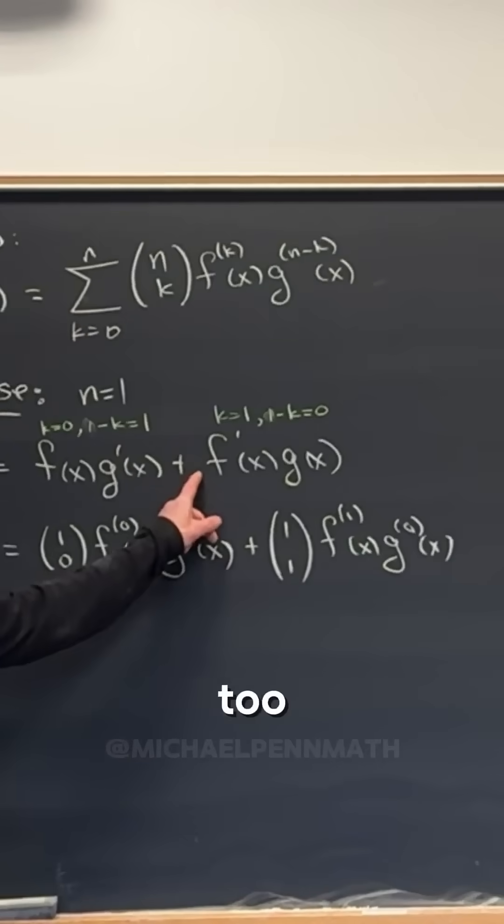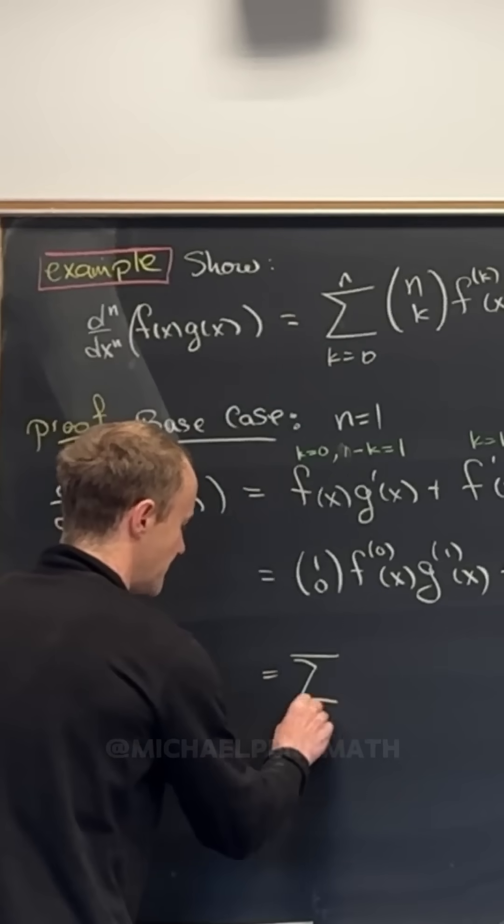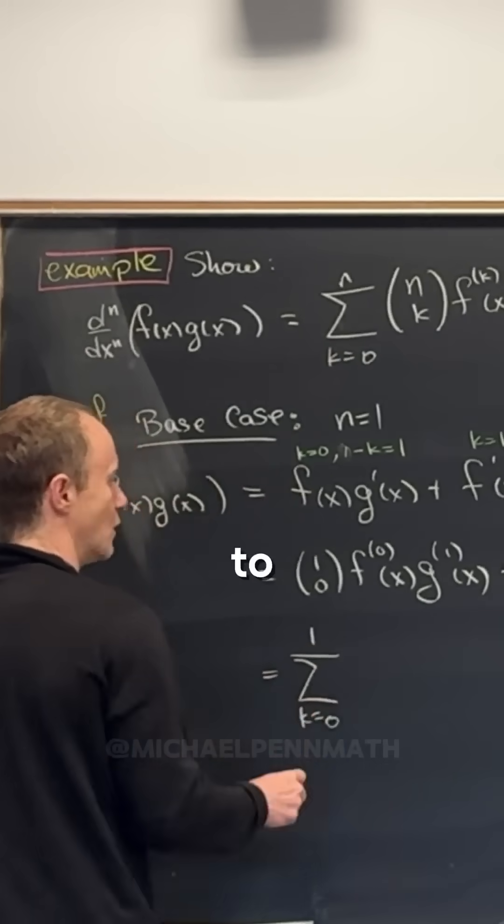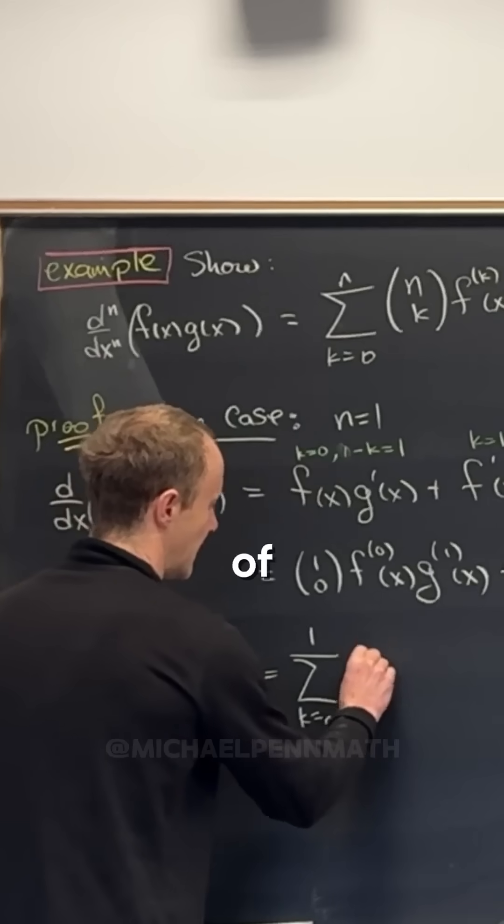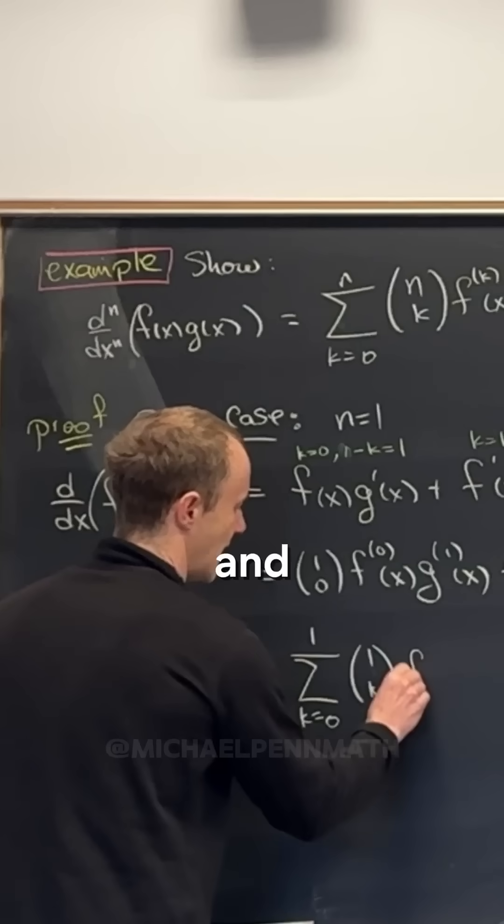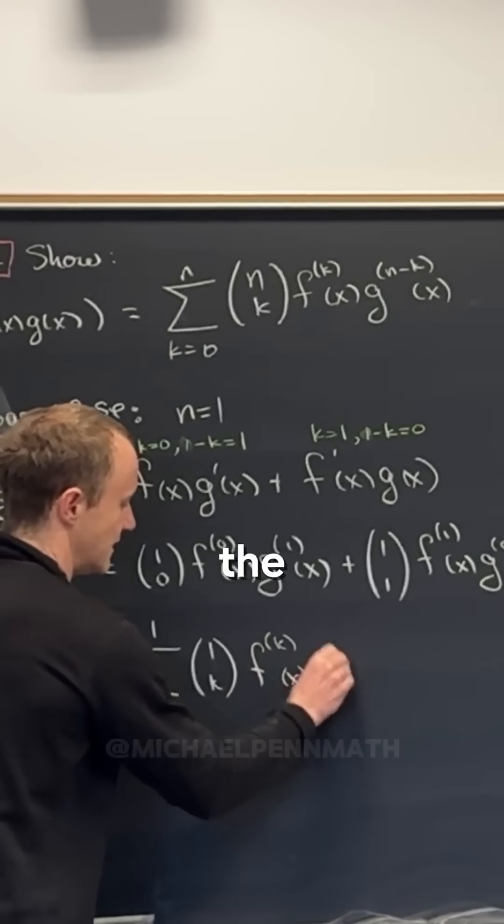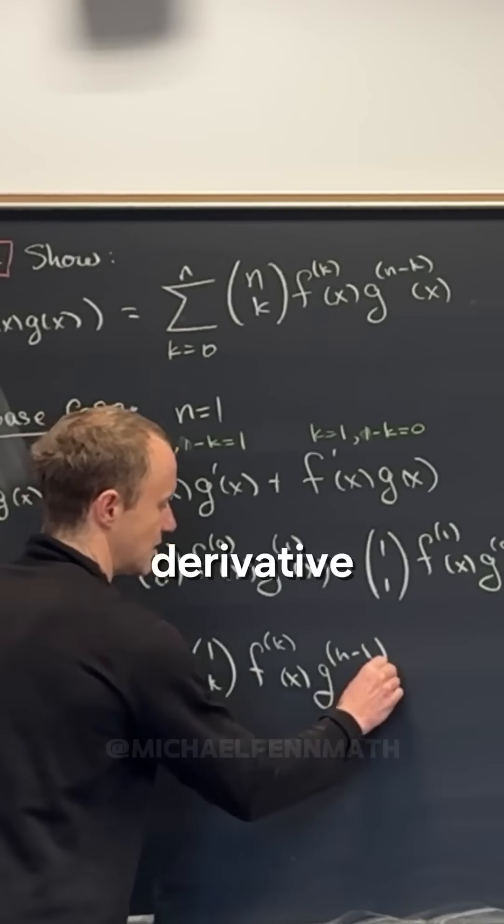Then there's a 1 right here too. We might as well take that 1 and write it as 1 choose 1. But now check it out. This is exactly equal to the sum as k goes from 0 to 1 of 1 choose k, and then the kth derivative of f, and then the (n minus k)th derivative of g.